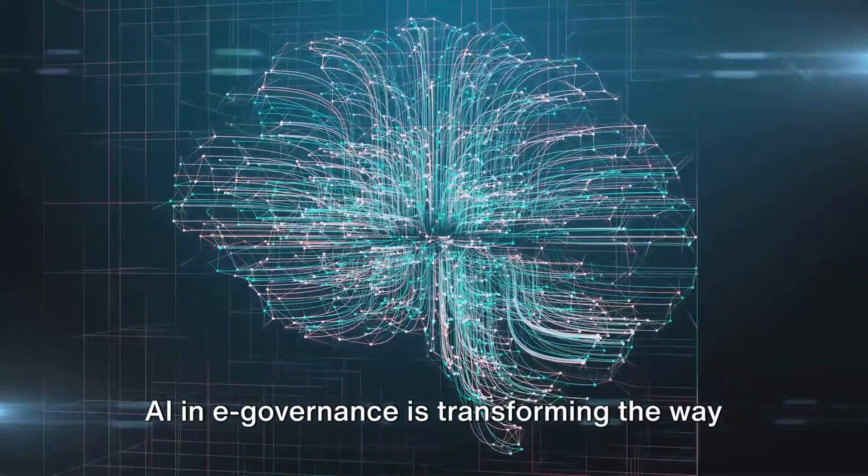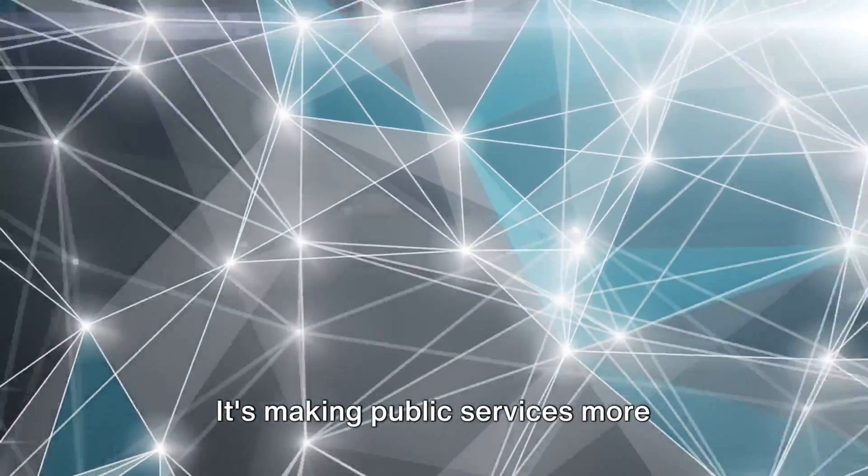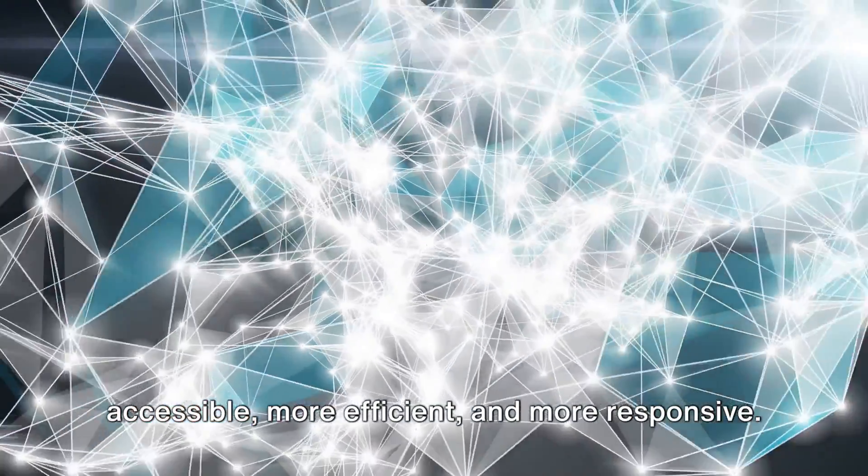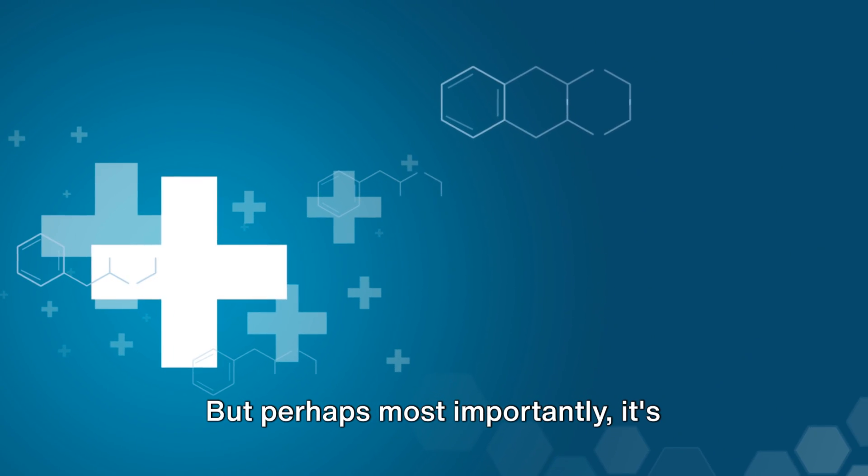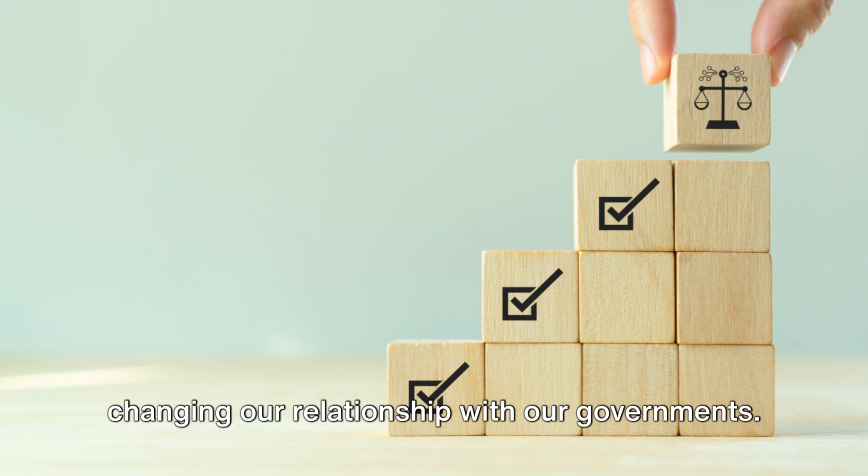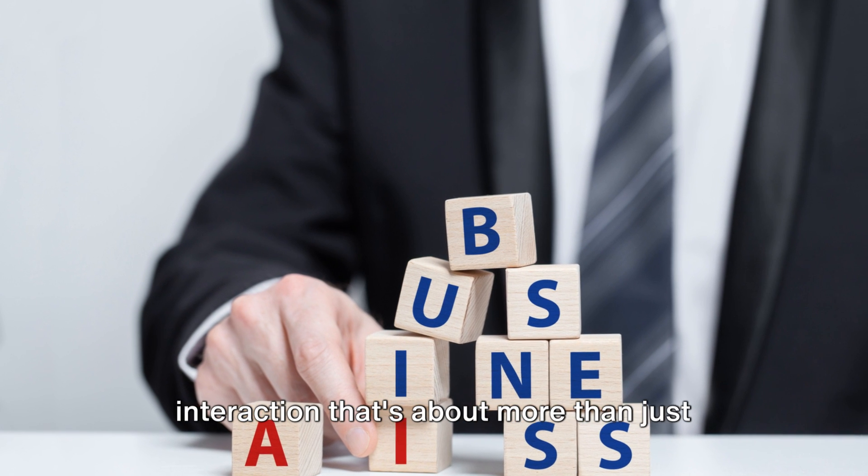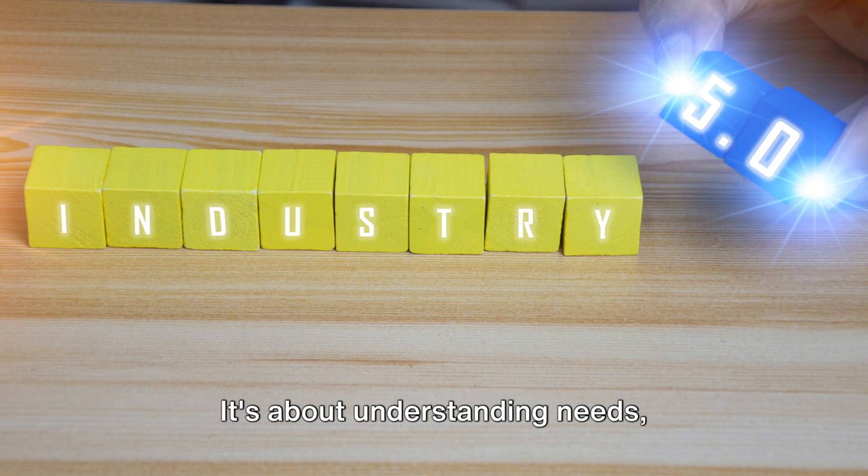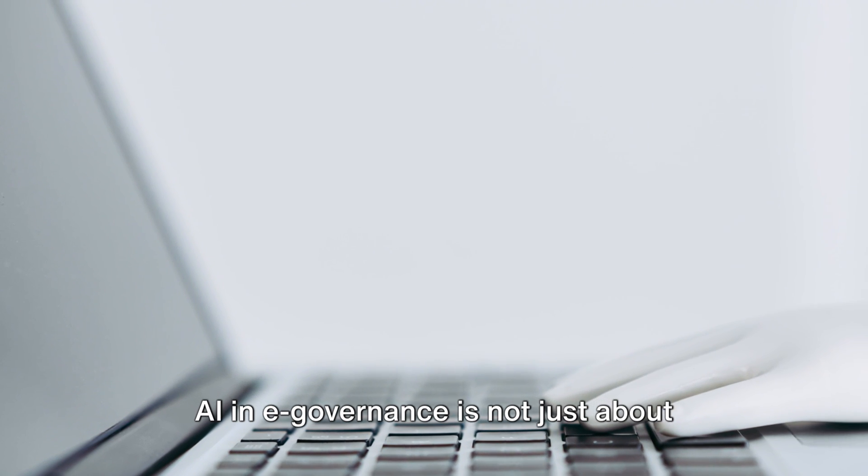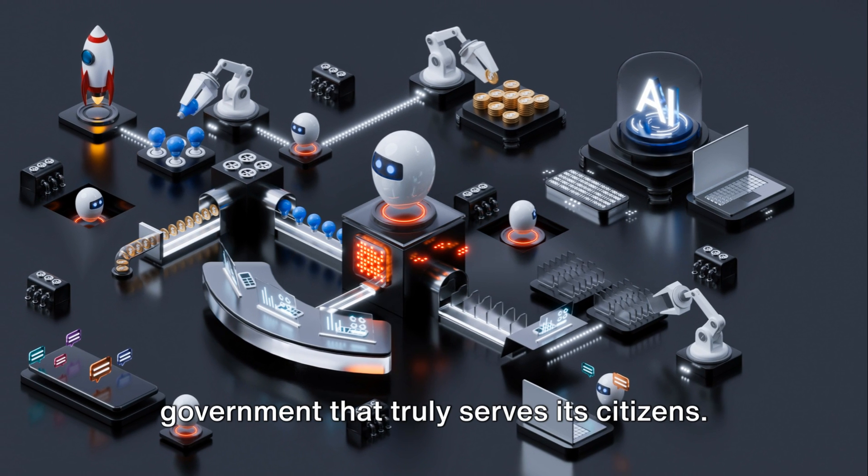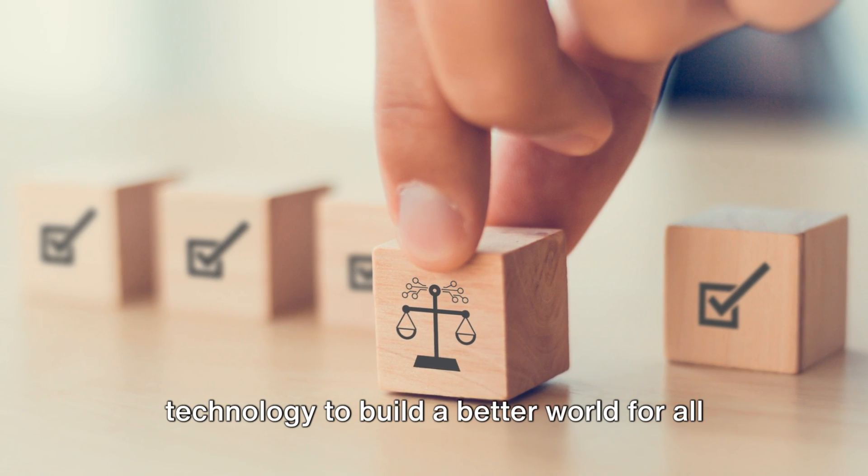So what does this all mean for us? AI in e-governance is transforming the way our governments function. It's making public services more accessible, more efficient, and more responsive. It's helping to create a government that doesn't just react to issues, but anticipates them. But perhaps most importantly, it's changing our relationship with our governments. It's creating a dialogue, a two-way interaction that's about more than just providing services. It's about understanding needs, predicting challenges, and working together to solve them. AI in e-governance is not just about efficiency. It's about creating a government that truly serves its citizens. It's about harnessing the power of technology to build a better world for all of us.